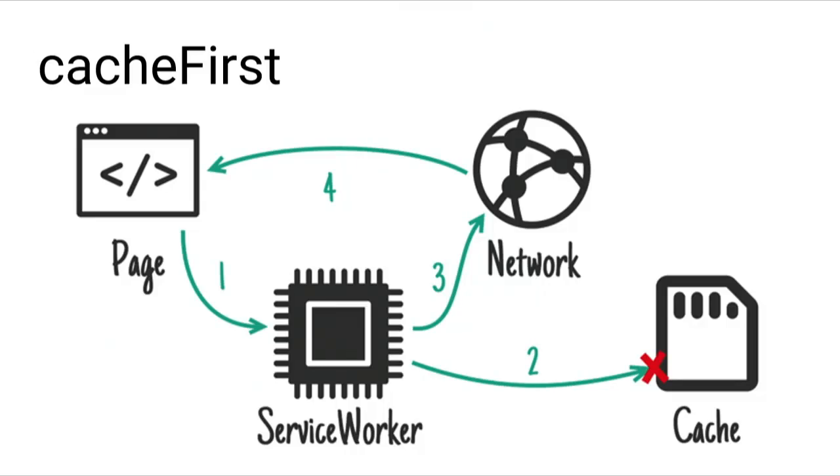Cache-first is good for resources that never change but that aren't part of your shell, so you don't want to pre-cache them. Imagine a blog with ten years' worth of articles — you don't want to download all ten years' worth as soon as a user lands on your page. But you do want, if someone's going backwards and forwards, to just use the version in the cache. A trick here would be to version the URL of your articles so that if you do want to make a change, users will still get it.